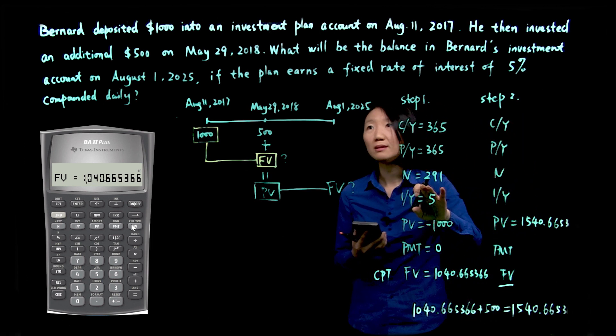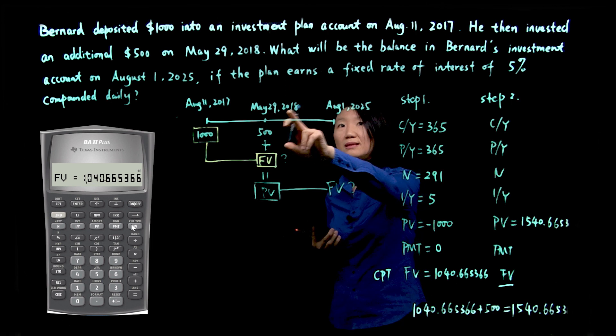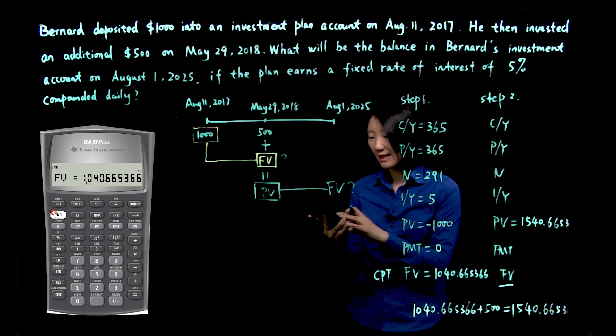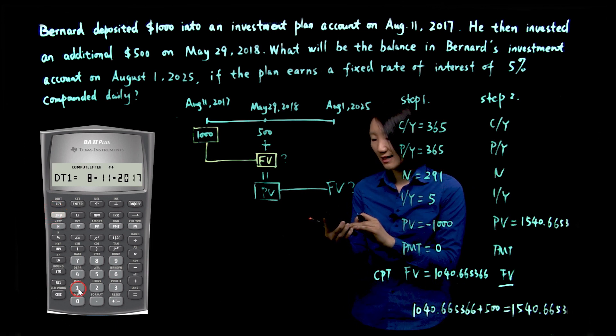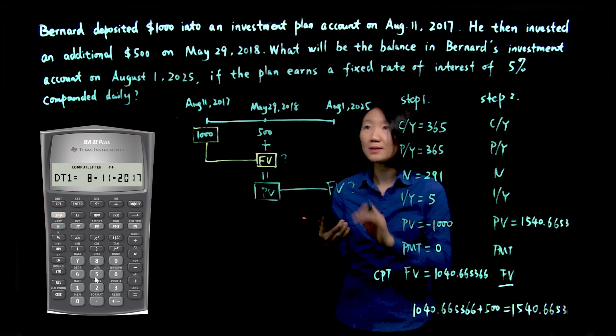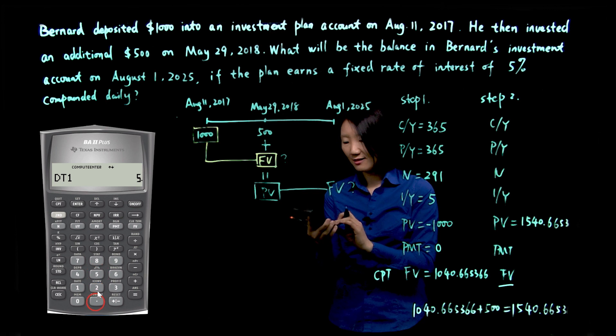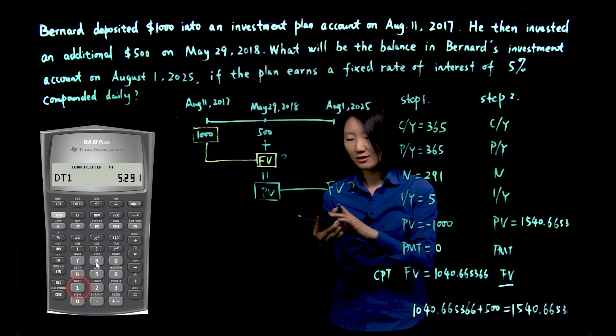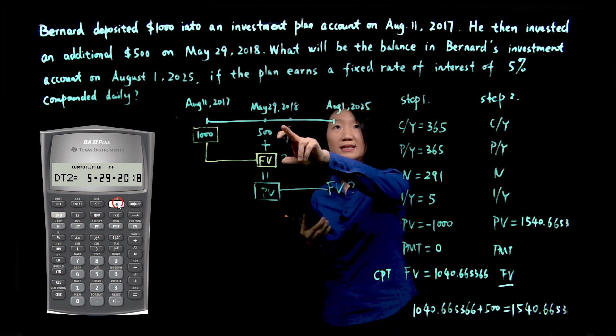So N between these two dates. We need to find out the dates. So again, let's go to second date function. First date is 5.29.18. Enter, that's for May 29th, 2018.